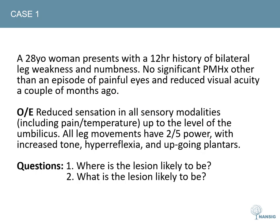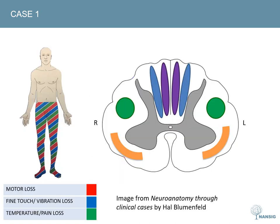Now we move on to the clinical cases. This first case involves bilateral leg weakness and loss of all sensory modalities below the umbilicus. The bilateral neurology with a clear cut-off at the umbilicus tells us the lesion is likely in the cord. The umbilicus translates dermatomally to a T10 level, so we're thinking about a lesion around T10 in the cord.